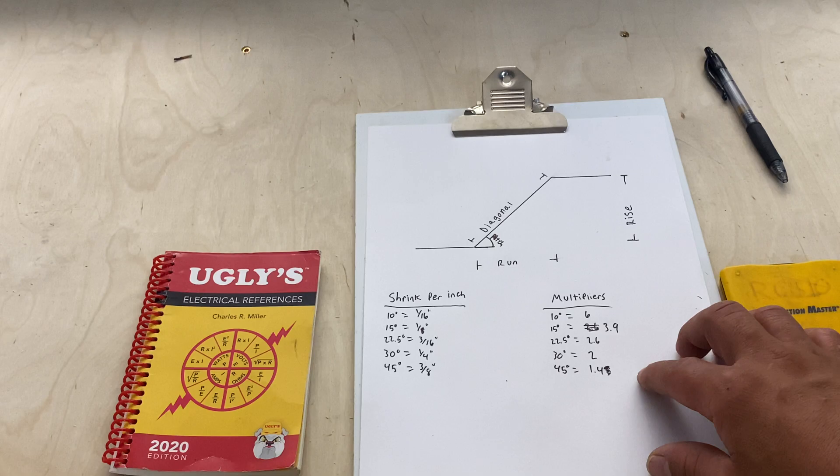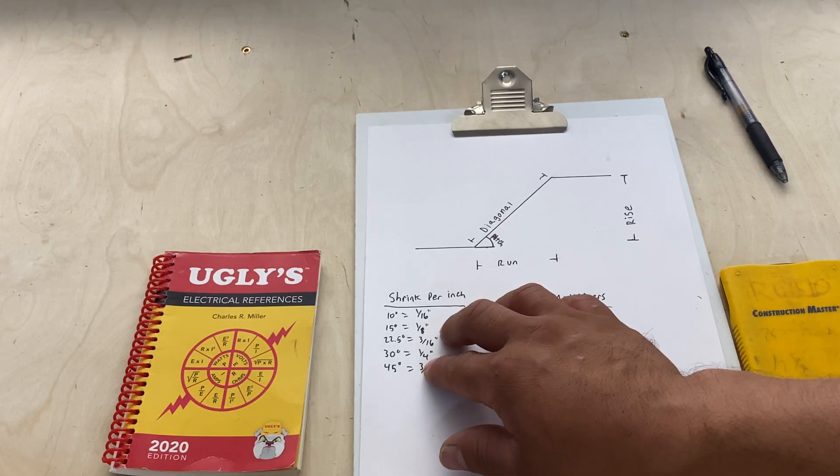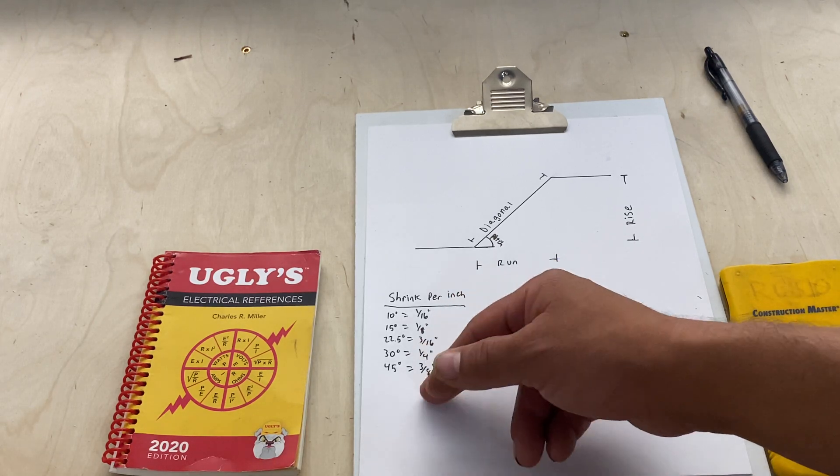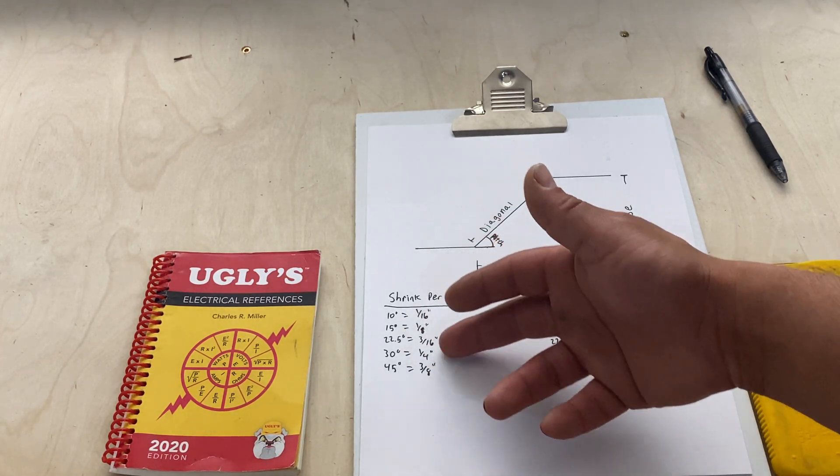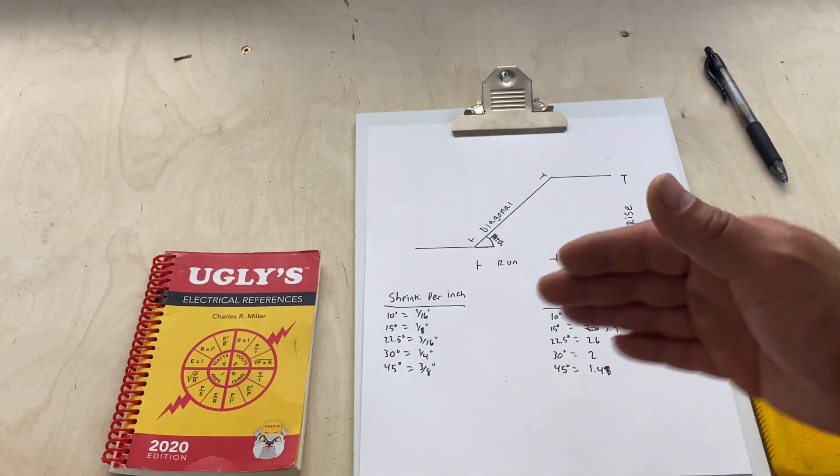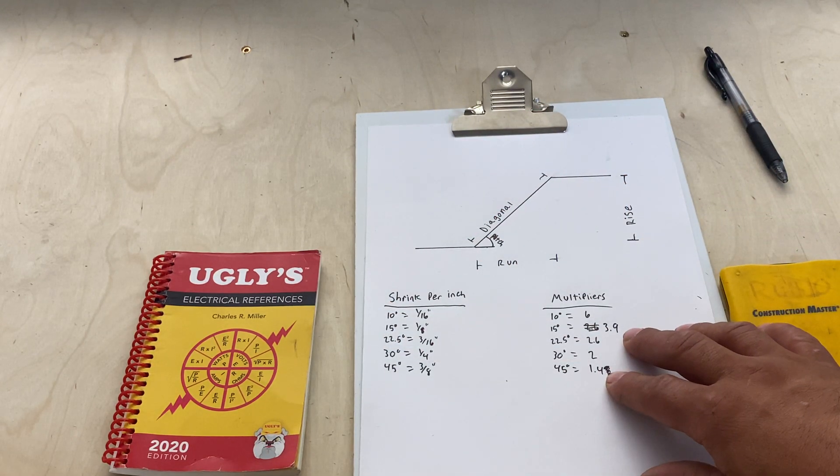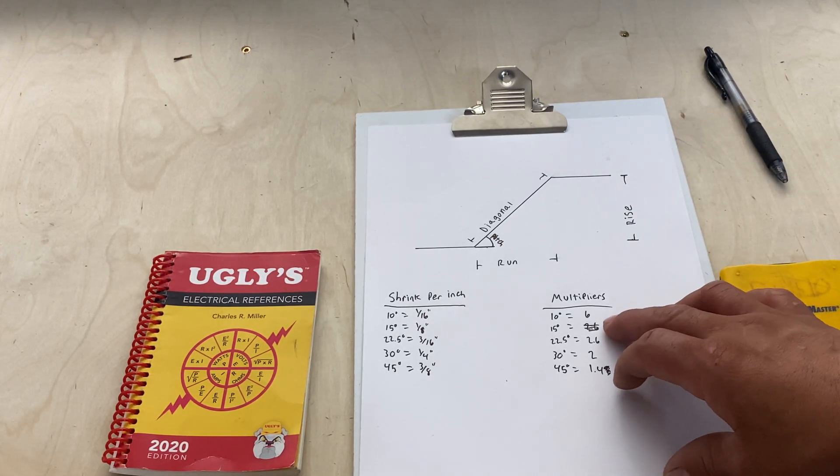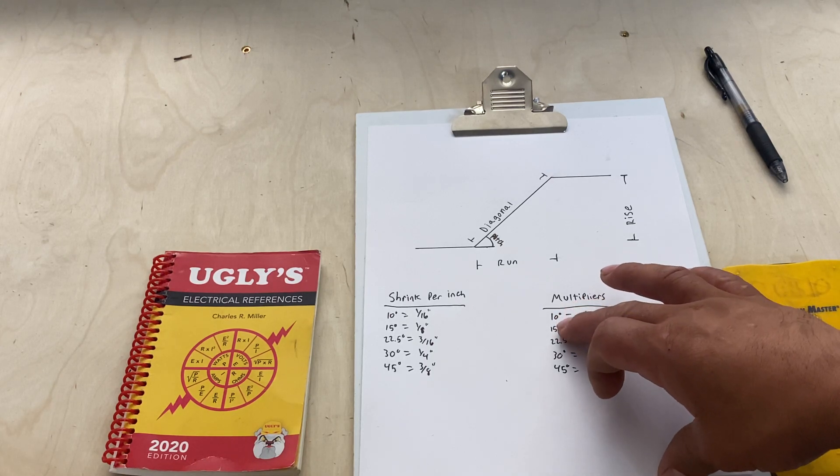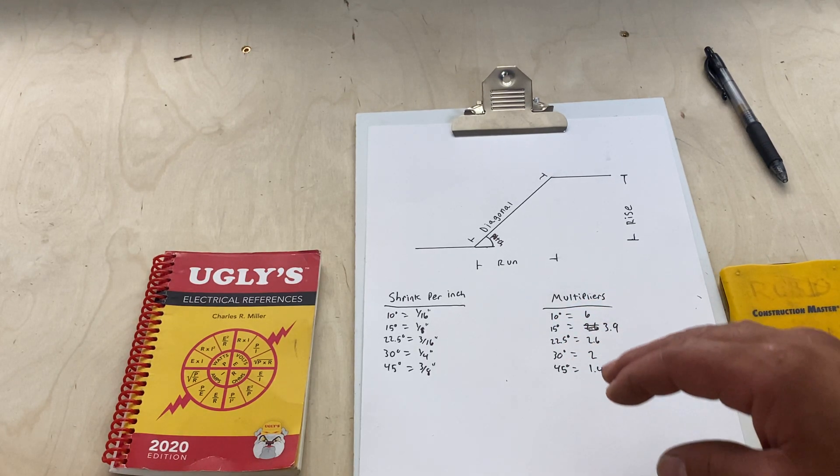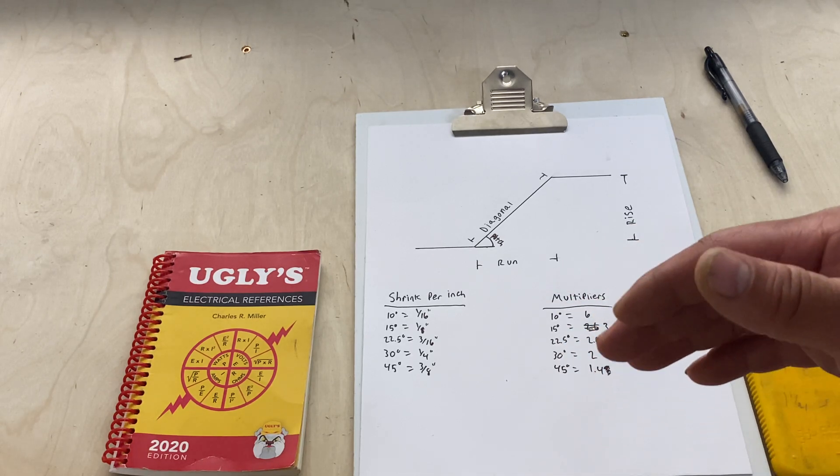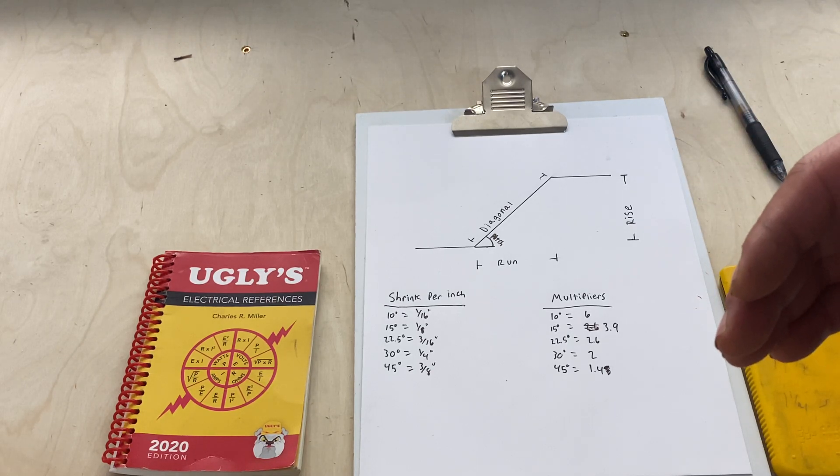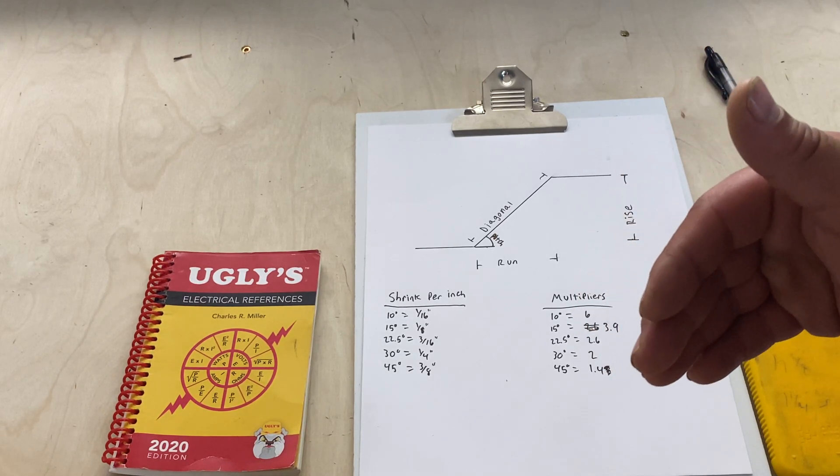The thing about that is this gets you by with solid numbers. If you're doing a three and three-eighths, that's where it starts to get confusing. These are your multipliers, so depending on your rise or your offset that you need, you'll multiply that by one of these numbers depending on what degree you're using. That'll depend on the size of conduit you're using, the workspace you have, and if you want the least amount of pull resistance.